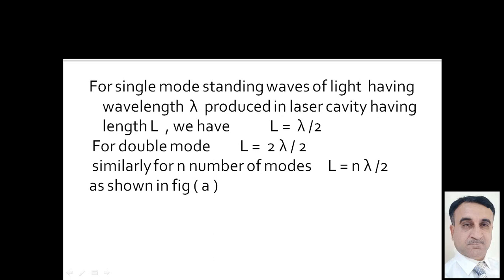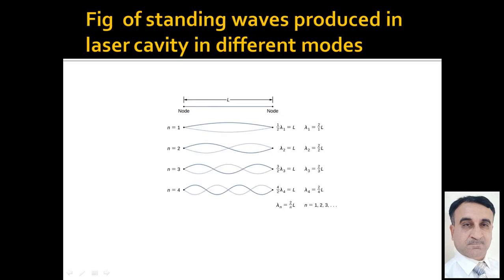This relation between the wavelength of standing waves produced in the laser cavity and the length of the cavity is shown in a figure. The figure shows standing waves produced in the laser cavity in different modes. At the ends of the cavity, nodes are always formed. For the n-th mode, we can write: L = n·lambda/2. All these are different shapes of standing waves of light produced in the laser cavity.